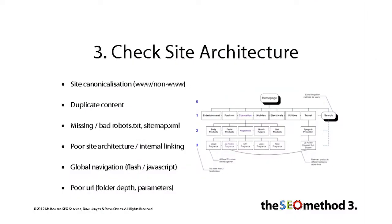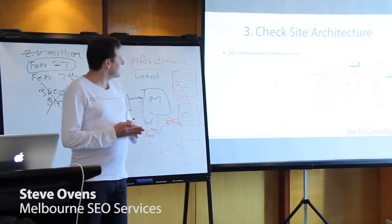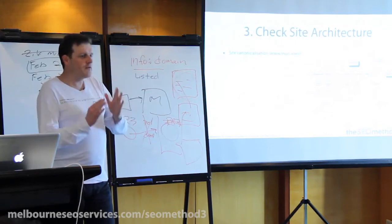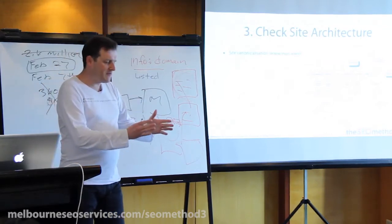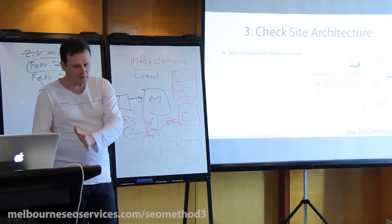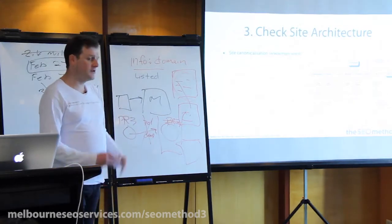So we zoom out and look at the site architecture. The common things we're going to find are site canonicalization. This is basic stuff that we should have got right all the time, but web designers don't always get it right. If I go to a site, I should have one canonical version. If I go to the www version, that should work, and the non-www version should redirect using a 301 redirect to the www version, or vice versa. So many sites don't do that, and that's a common thing we find is not in place.